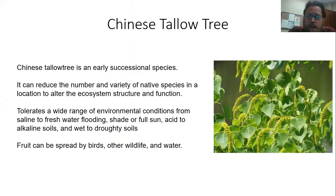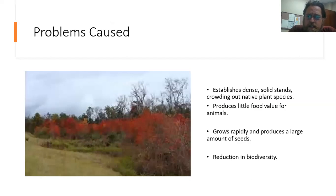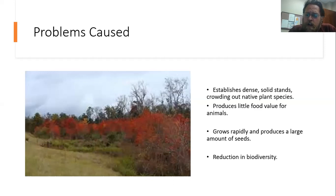Chinese tallow tree can tolerate an extraordinarily wide range of environmental conditions — it can grow in brackish water, tolerate flooding, grow in shade or full sun, and isn't particular about soils. Fruit can be spread by birds, other wildlife, and by water, so seeds float along during floods and move to new places. It can establish really dense solid stands that crowd out native species, doesn't produce much food value for animals — though beekeepers may argue that point as bees do particularly enjoy it — and produces a lot of seeds.